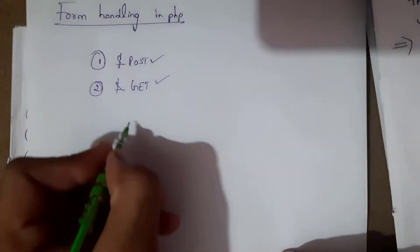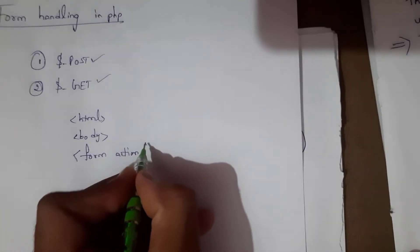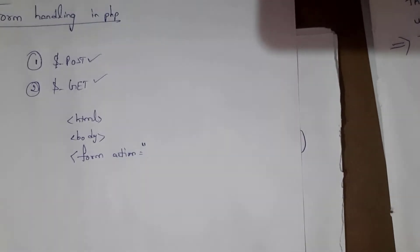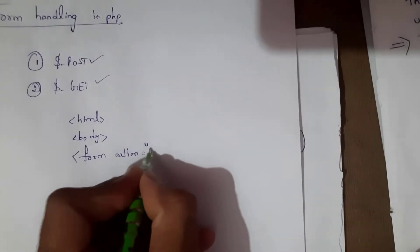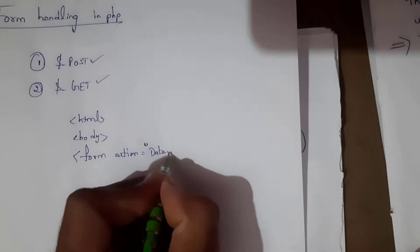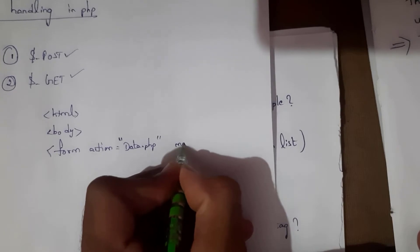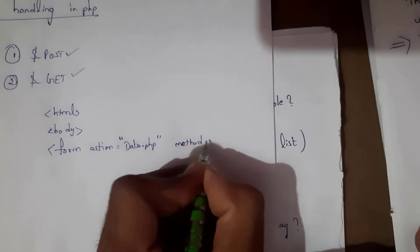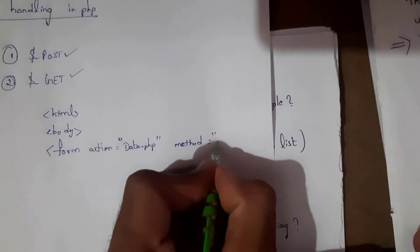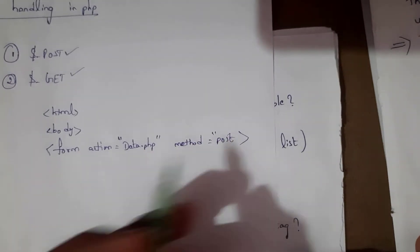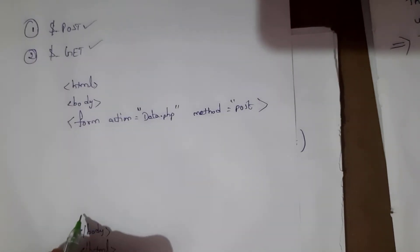First we need to write an HTML file with html and body tags, and similarly close them. We can create a form by using the form tag: form action equals — here we include the PHP file, for example data.php — and then the method is post. I open the form tag and similarly I need to close this form tag.